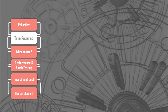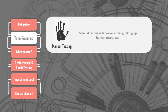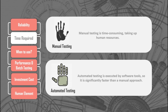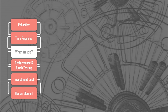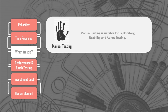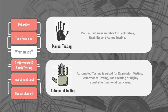When it comes to time required, manual testing is obviously time-consuming and takes up human resources, but automated testing is executed by software tools and scripts, making it significantly faster. Manual testing is suitable when test cases are run only once or twice — it is suited for exploratory, usability, and ad hoc testing. Automated testing is suitable when test cases need to be run repeatedly for a long duration of time — it is suited for regression testing, performance testing, load testing, or highly repeatable functional test cases.